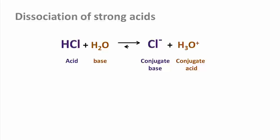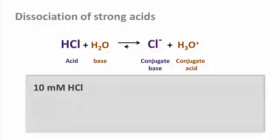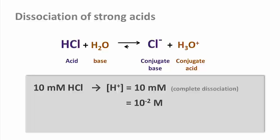That allows us to calculate the pH of a 10 millimolar solution of hydrochloric acid. It's going to dissociate completely to give 10 millimoles per liter protons, which is 10 to the minus 2 molar. And that equals pH 2.